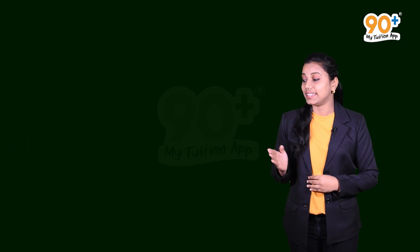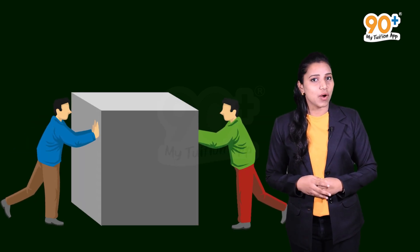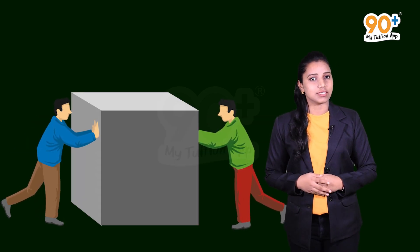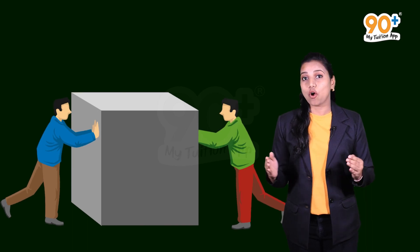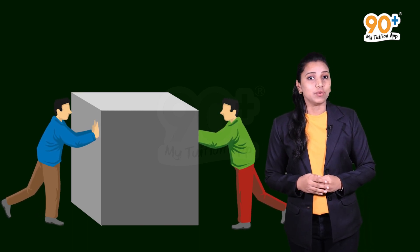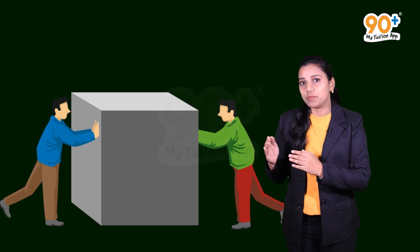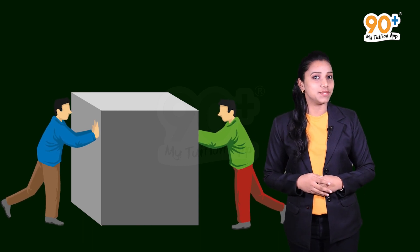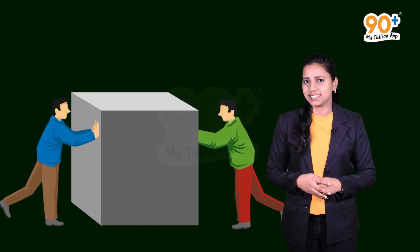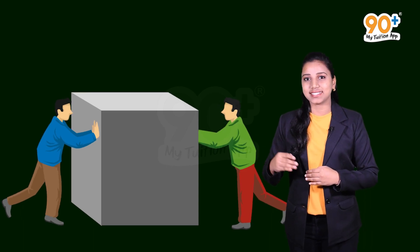In this example, two boys are applying equal forces in opposite directions. The net force acting on that box becomes zero, and the result is the box remains at rest.